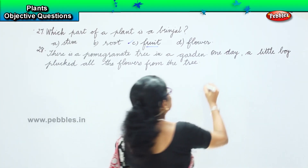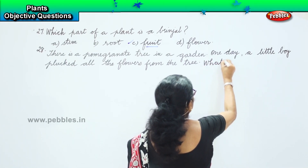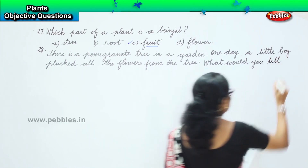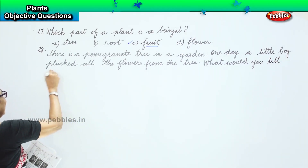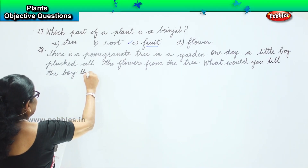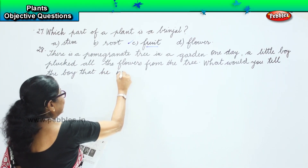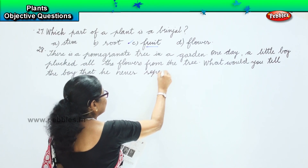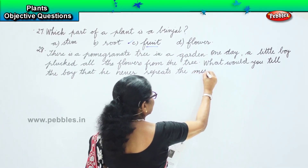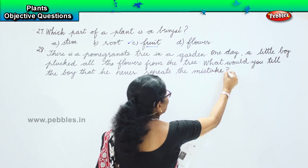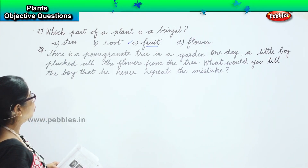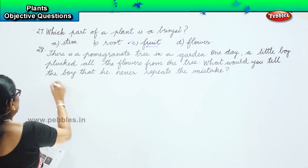What would you tell the boy, that he never repeats this mistake? There is a pomegranate tree in the garden. One day a little boy plucked all the flowers from the tree. What would you tell the boy that he never repeats the mistake? The options given to you are A...